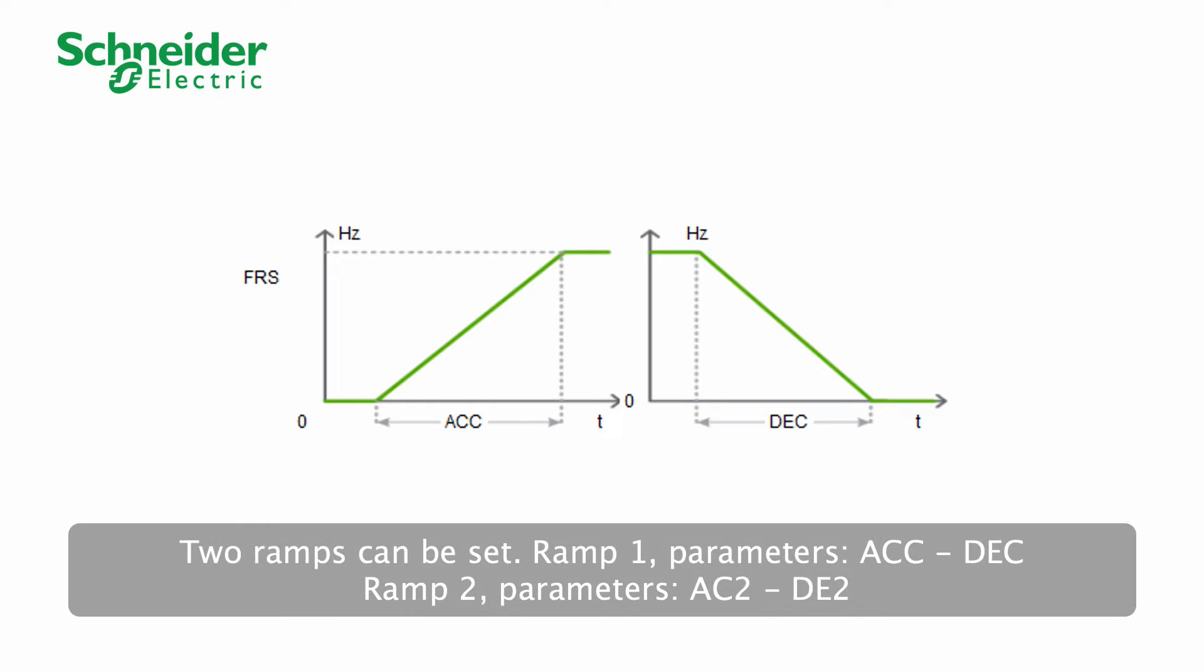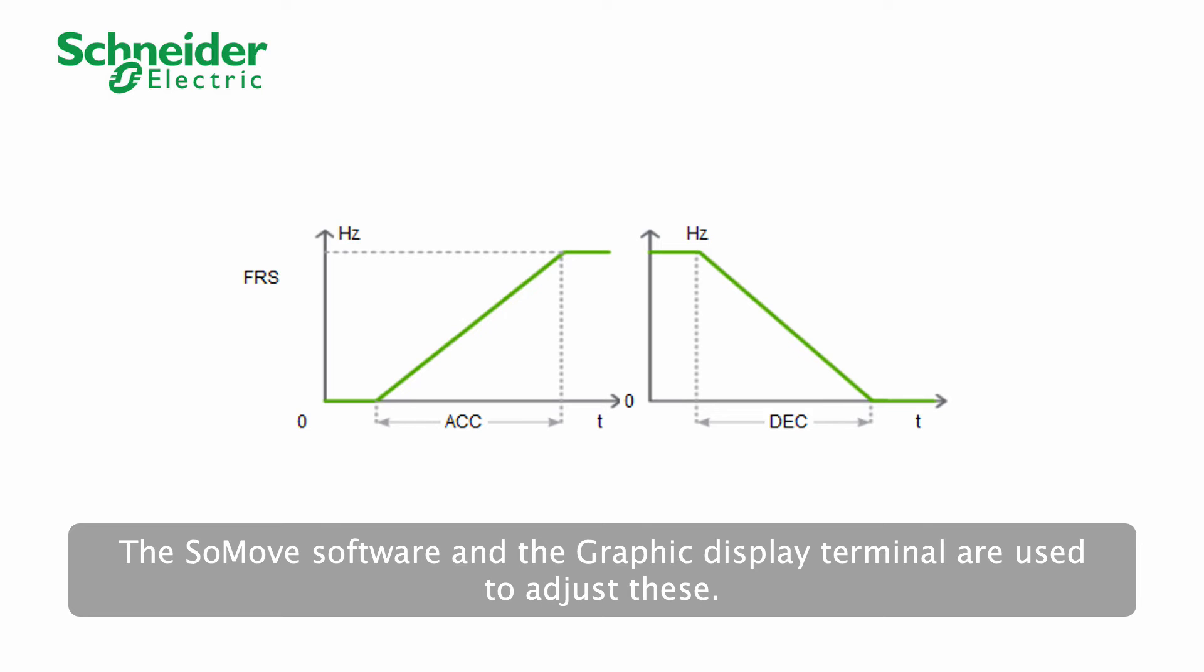Two ramps can be set. Ramp 1 parameters: ACC and DEC. Ramp 2 parameters: AC2 and DE2. The SoMove software and the Graphic Display Terminal are used to adjust these.